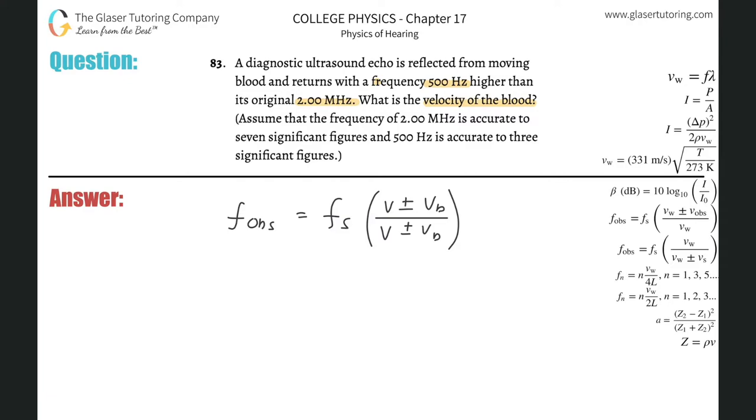For the signs, if the ultrasound is traveling one way and the blood is traveling the opposite direction, we know the frequency is higher when it returns. When they come together, this should be a plus here and this should be a minus.